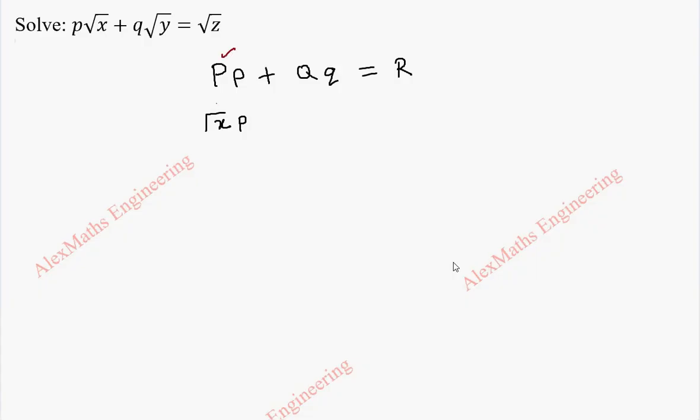By comparison, we know capital P is root x. In the same way, the second term is root y into small q and the last term is root z. So again by comparison, we know capital Q and we know capital R. So now capital P is root x, capital Q is root y and capital R is root z.